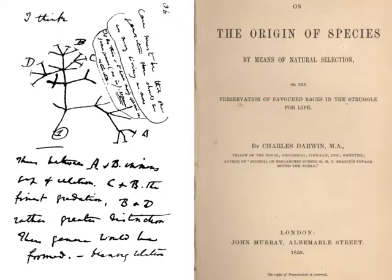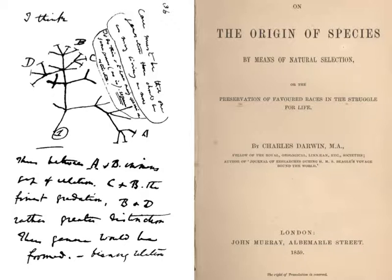The first observation Darwin made was that members of a population vary in their inherited traits. The second observation was that all species produce more offspring than their environment can support, and many of these offspring fail to survive and reproduce — lots of babies, not so many things surviving. His first inference is that individuals whose inherited traits give them a higher chance of survival and reproduction in a given environment tend to leave more offspring than other individuals. His second inference is that the unequal ability of individuals to survive and reproduce will lead to the accumulation of favorable traits in the population over time. Good traits equal survival; bad traits, unsuited for the environment, lead to death. That's how natural selection works in a nutshell.